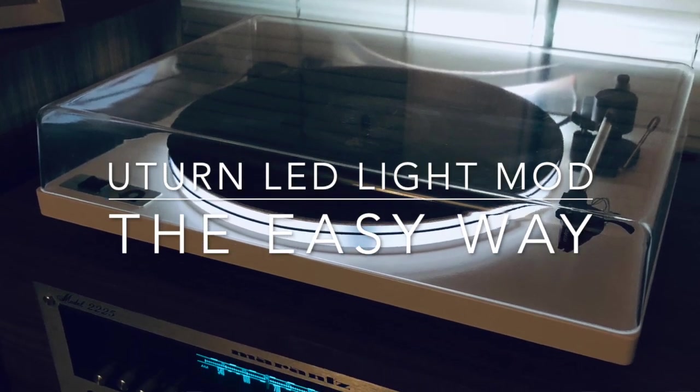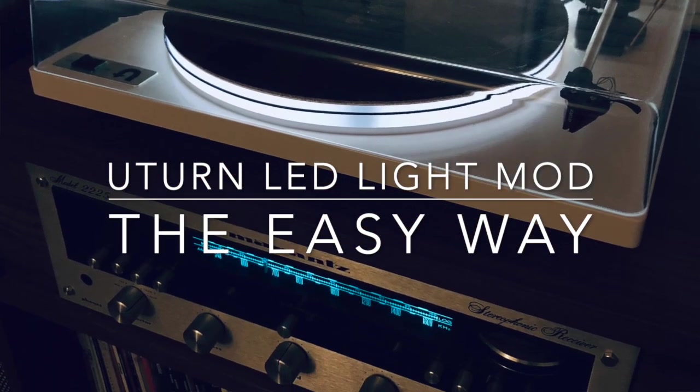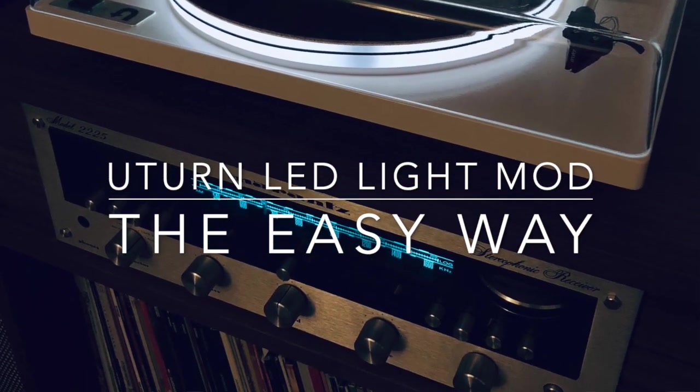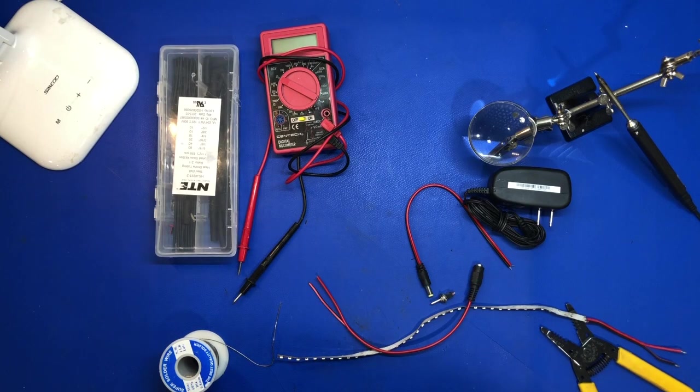All right Internet, I made this thing yesterday for my U-Turn turntable which has a clear platter that's super see-through. I've seen people put LED lights behind it, so I was like that's easy, let's do it. It looked awesome. I put it together and then a couple people asked, well how do you do it?